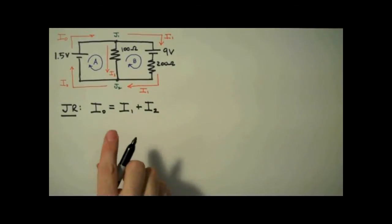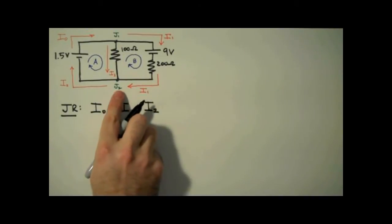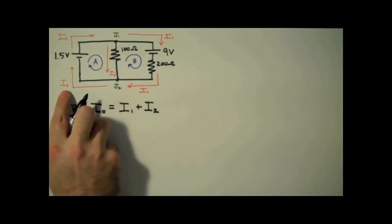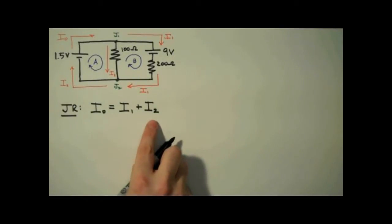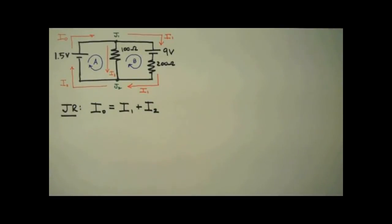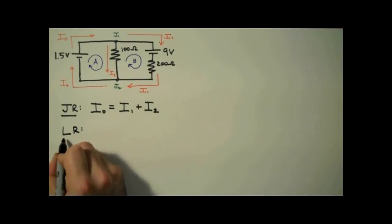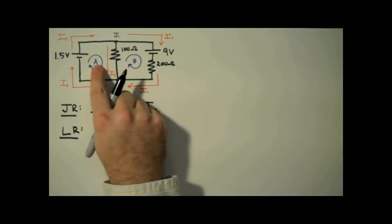If I apply the junction rule to junction 2, we'll have I1 coming in as well as I2 coming in, so on the left-hand side it would be I1 plus I2, and we have I0 coming out on the right side. This is exactly what we have already written, so we're not going to use that equation. Now we apply the loop rule to loop A, which states that the sum of the voltages around a closed loop is equal to zero.